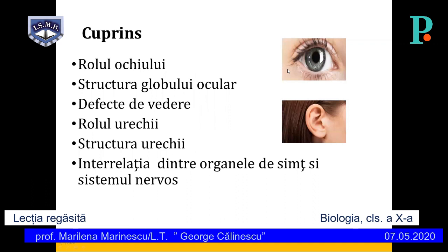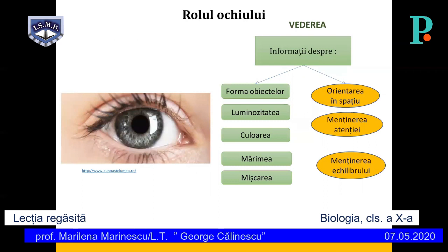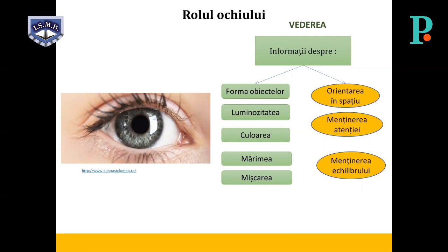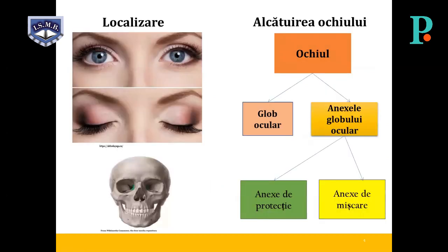Vom discuta despre rolul ochiului, structura globului ocular, defecte de vedere, rolul urechii, structura urechii și interrelația dintre organele de simț și sistemul nervos. Rolul ochiului este vederea, care furnizează informații despre forma obiectelor, luminozitatea, culoarea, mărimea și mișcarea. De asemenea, vederea dă informații privind orientarea în spațiu, menținerea atenției și menținerea echilibrului.